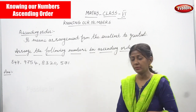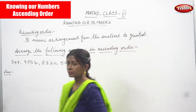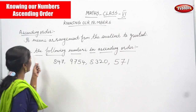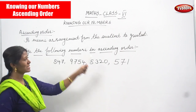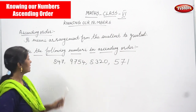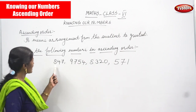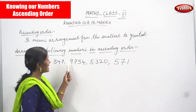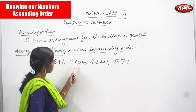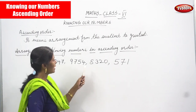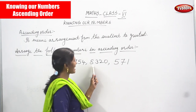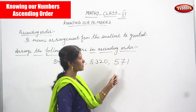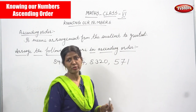Let me give an example. We are going to arrange the following numbers in ascending order. The numbers given are: 847, 9754, 8320, and 571.